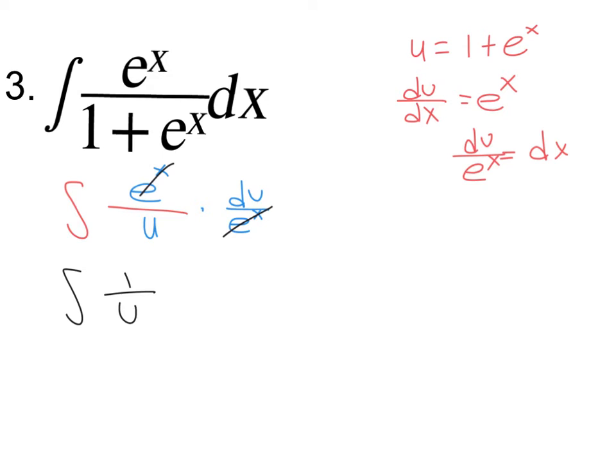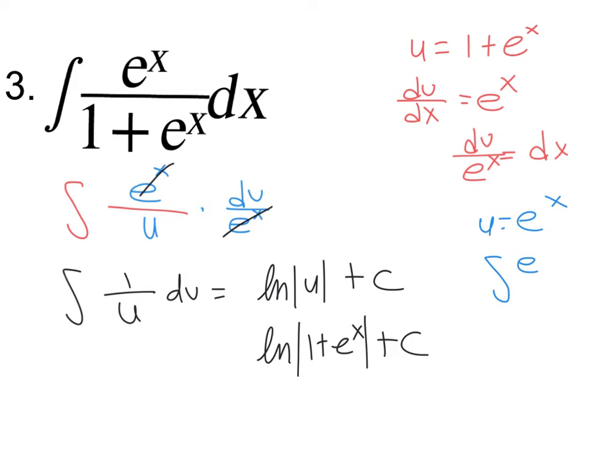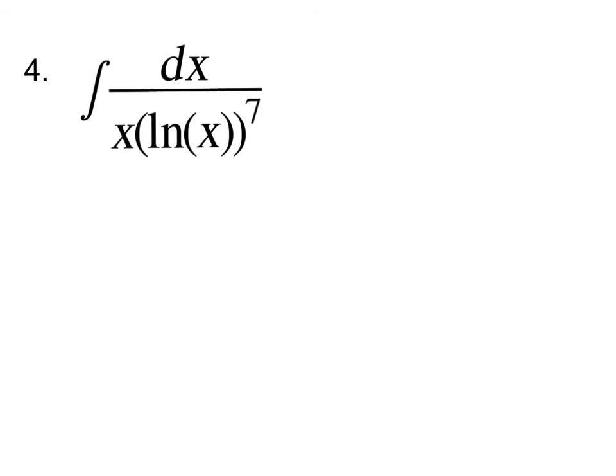And yet again, notice another one over u du, right? These come up a lot. ln of 1 plus e to the x. Now, if you did it where u was just e to the x, what you could have done was the integral of e to the x over 1 plus u du over e to the x, you end up with the same thing in the end. Because you have here, you would have the ln right in here. You'd have ln of 1 plus u instead of just u. So you could do it that way too. It doesn't actually matter.